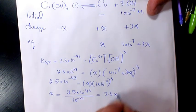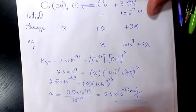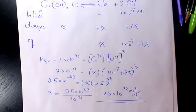That's going to be 2.5×10⁻²² mole per liter. That's going to be the molar solubility of cobalt hydroxide. I hope you enjoyed this video. Please leave me a comment if you have any question. Thank you for watching and have a great day.